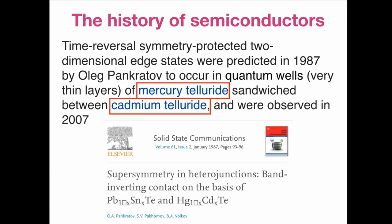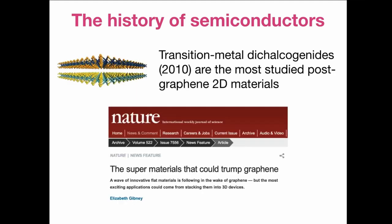In 1987, Oleg Pankratev predicted time-reversal symmetry protected two-dimensional edge states, which is exactly what topological insulators have — though this work is essentially unknown. After the discovery of graphene, there has been increased interest in two-dimensional chalcogenides, such as molybdenum sulfide, molybdenum selenide, tungsten sulfide, and tungsten telluride.